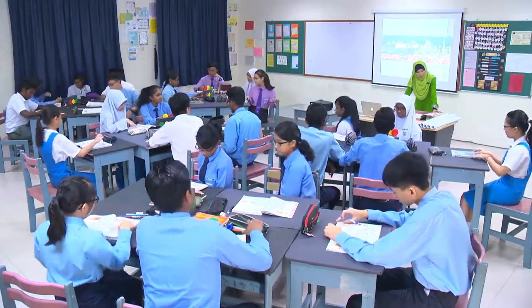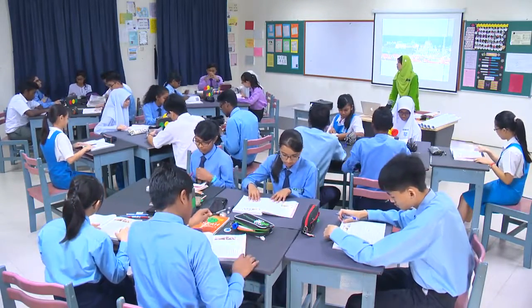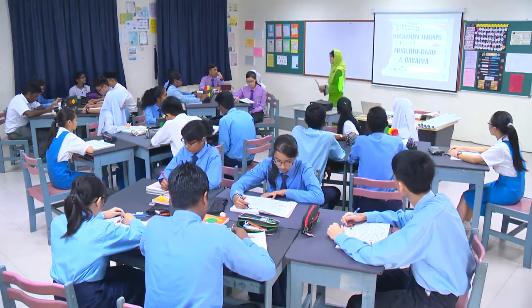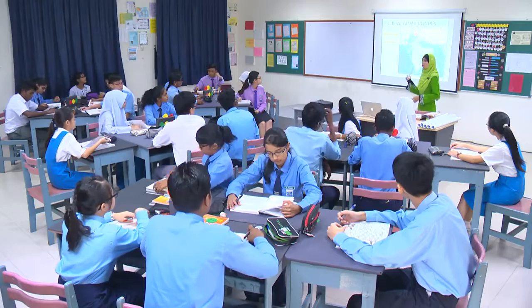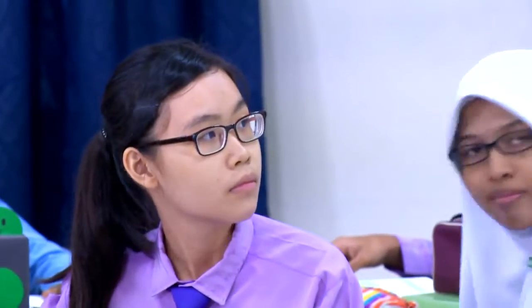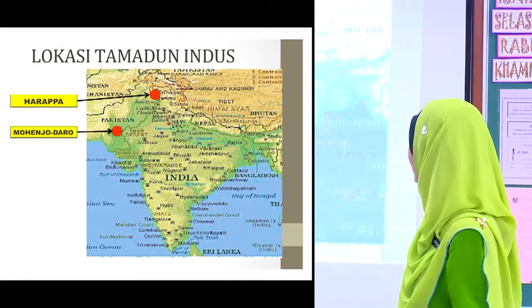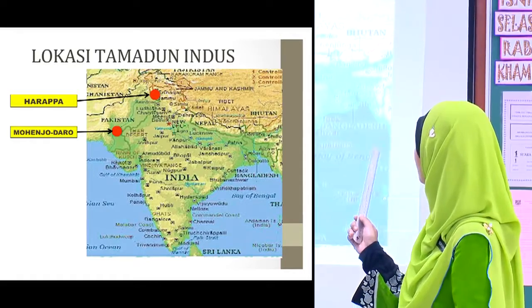Pengajaran kita pada hari ini ada kaitan dengan bandar terancang. Sebelum itu, Cikgu nak minta kamu buka buku teks muka surat 24. Kelas hari ini kita akan lihat Tamadun Indus iaitu pembinaan bandar terancang dalam Tamadun Indus. Dalam Tamadun Indus terdapat dua bandar terancang iaitu Bandar Mohenjo-Daro dan juga Harappa. Di dalam buku teks kamu terdapat peta yang menunjukkan kedudukan Tamadun Indus, dan Cikgu juga ada sediakan lokasi Tamadun Indus pada masa kini. Kedudukan bandar Mohenjo-Daro terletak berhampiran Barat Laut India manakala kedudukan bandar Harappa hampir dengan Pakistan.